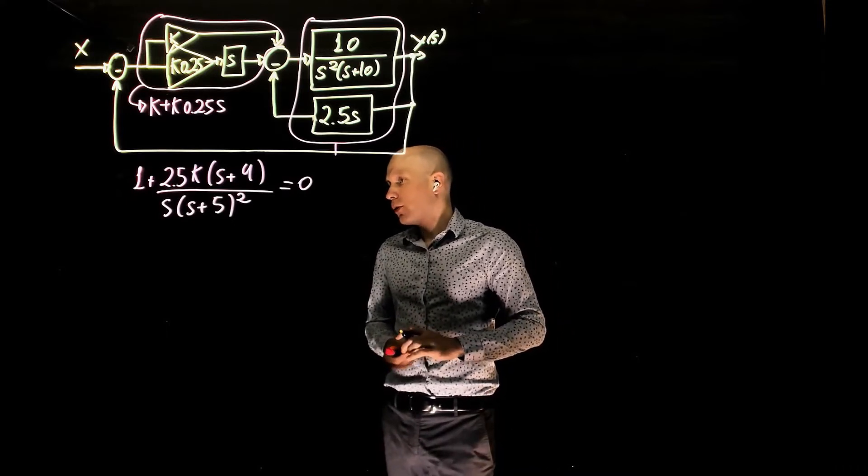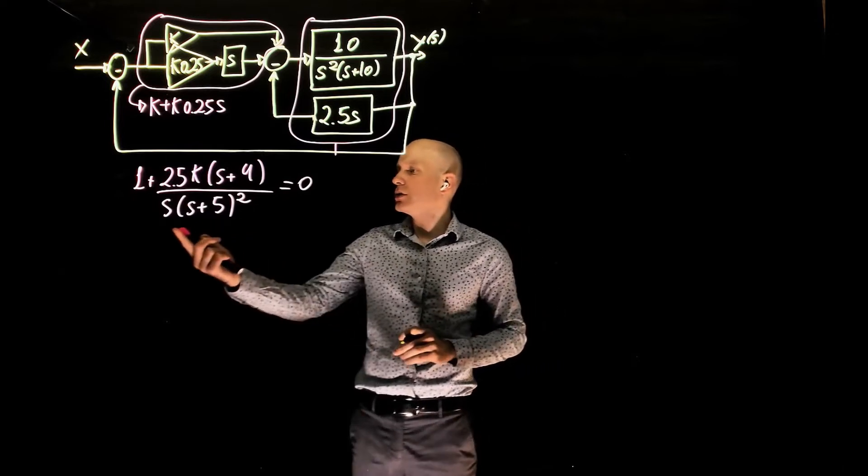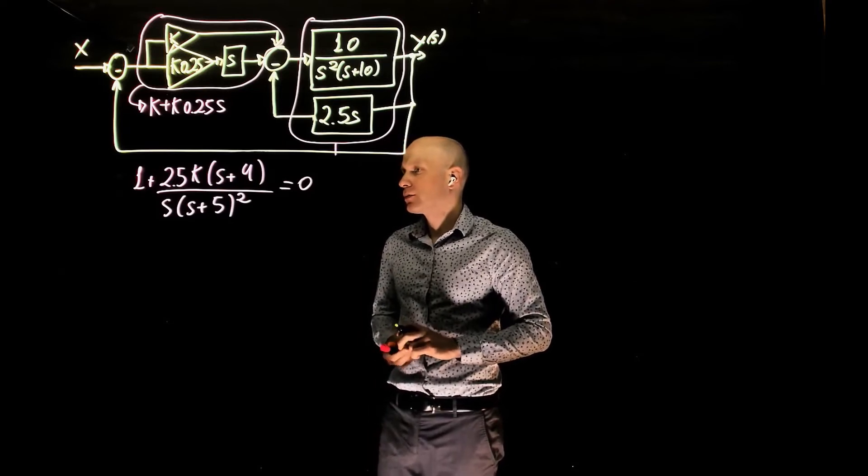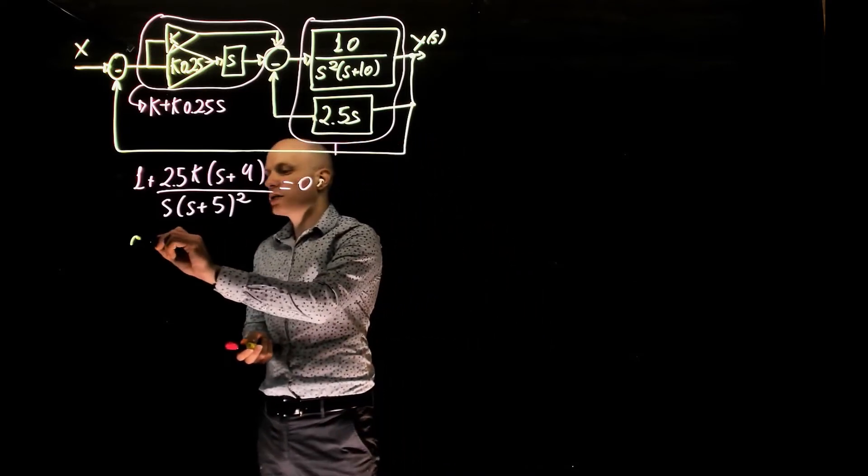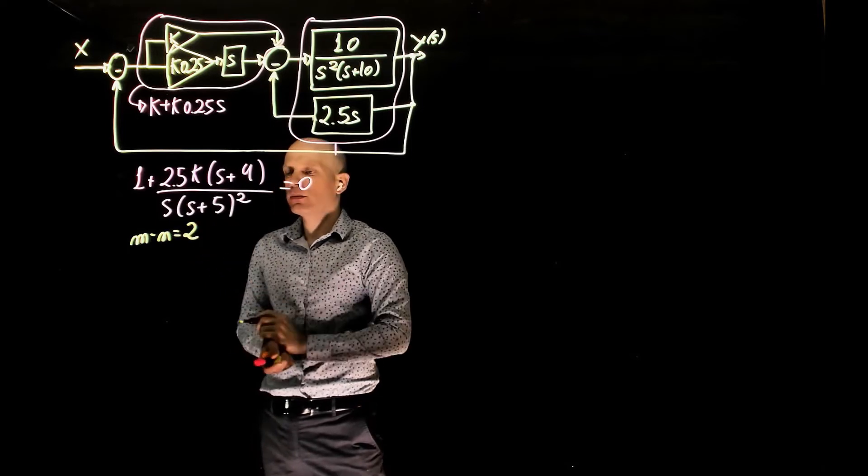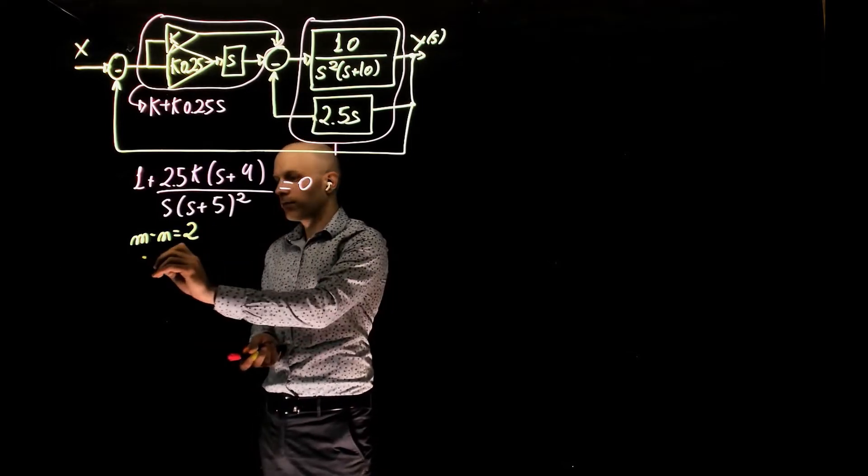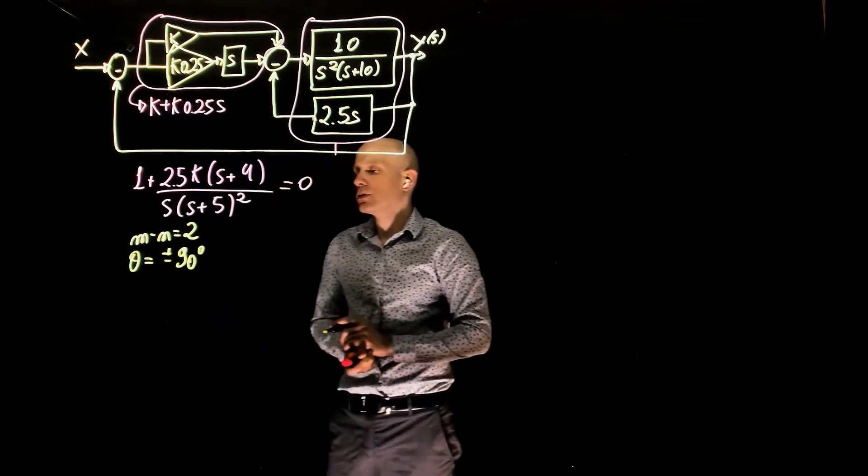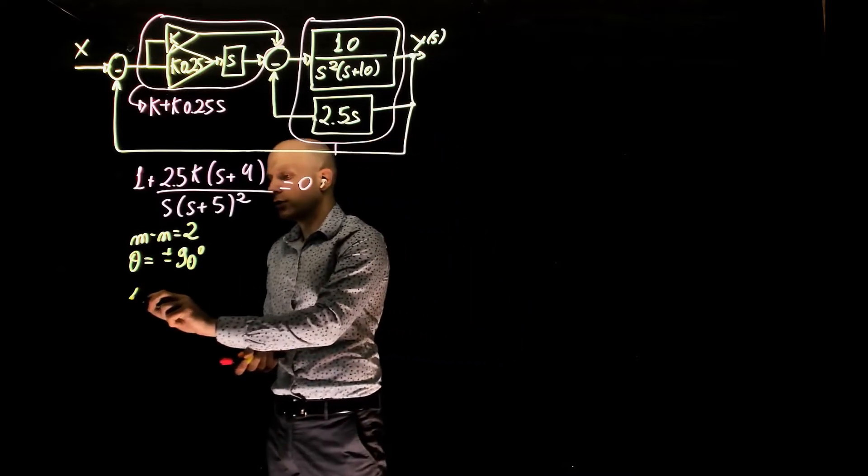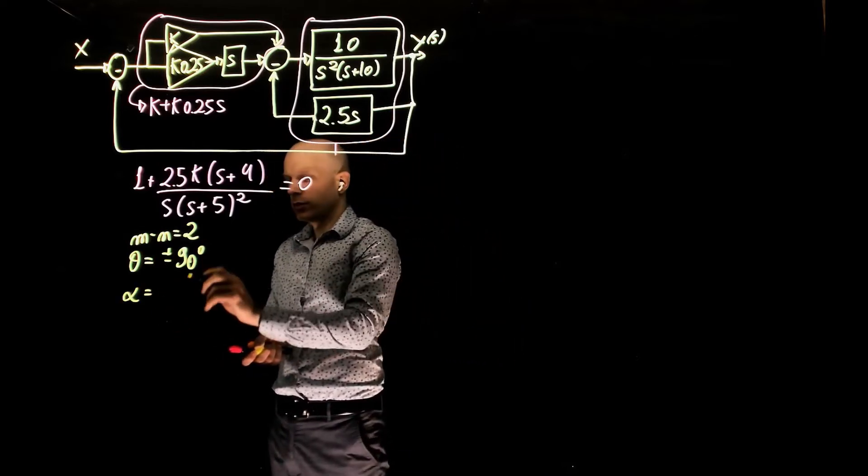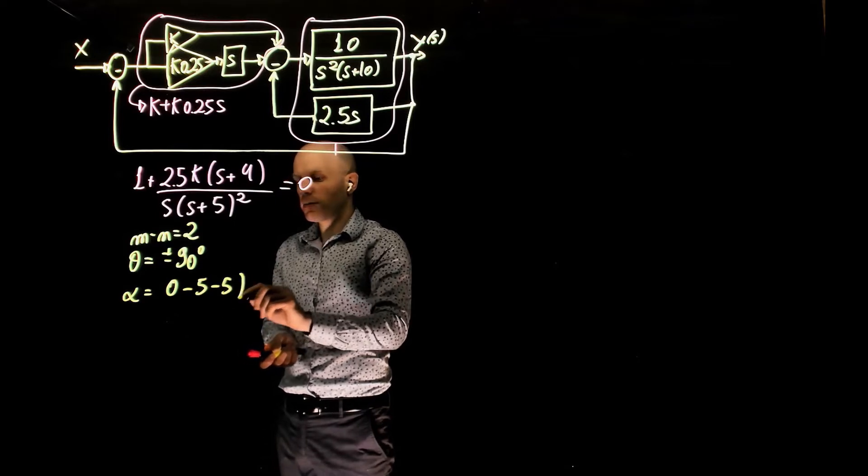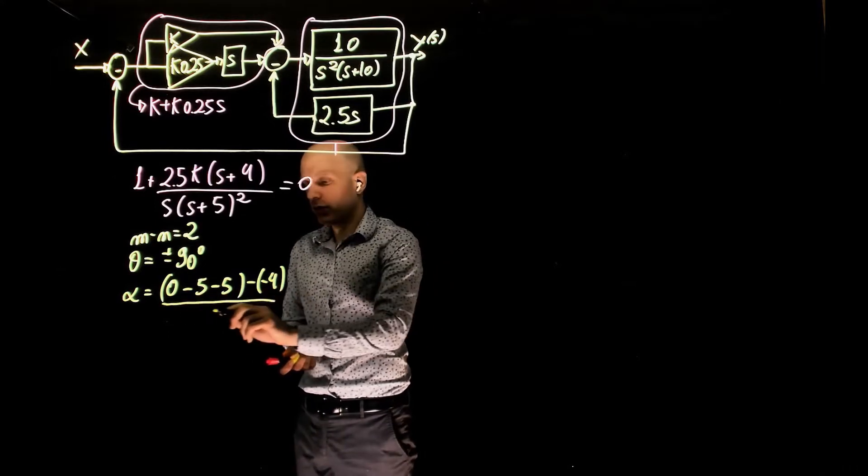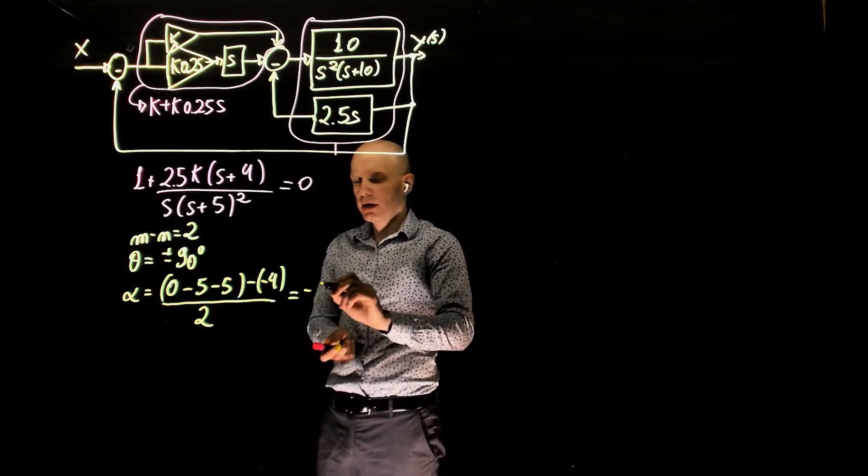Here we have 2, 3 poles and 1 zero, a pole at 0, 2 poles at negative 5, and 1 zero at negative 4. So in this case, m minus n equals 2, and that means that we have 2 asymptotes at plus minus 90 degrees. The centroid of the asymptotes are 0 minus 5 minus 5, sum of all poles, minus sum of all zeros negative 4, divided by 2, and this is negative 3.